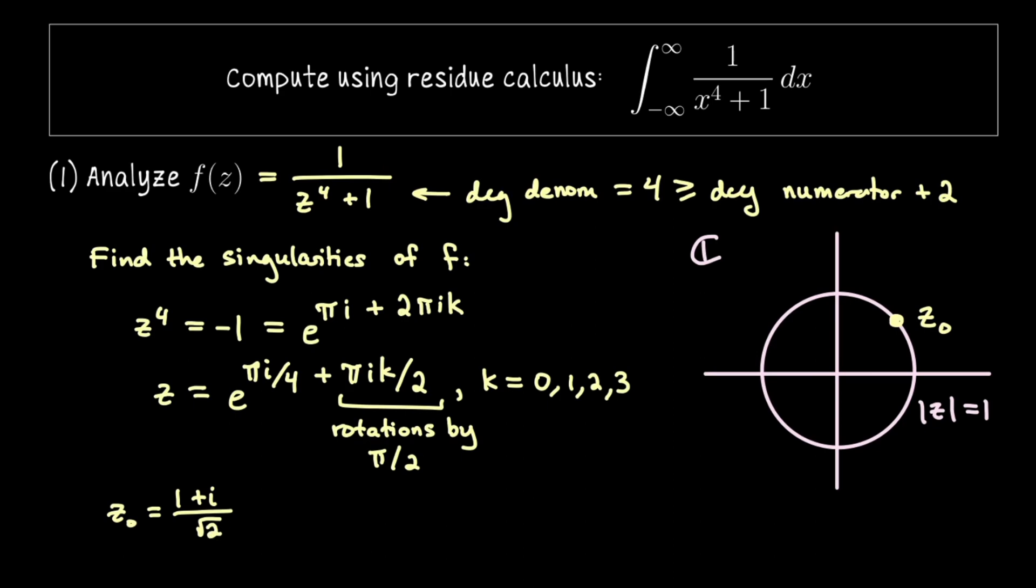All right rotating by pi over 2 in the complex plane lands us here. That's our next singularity. That's the complex number negative 1 plus i over the square root of 2 but I'm actually going to realize that it's z naught cubed.